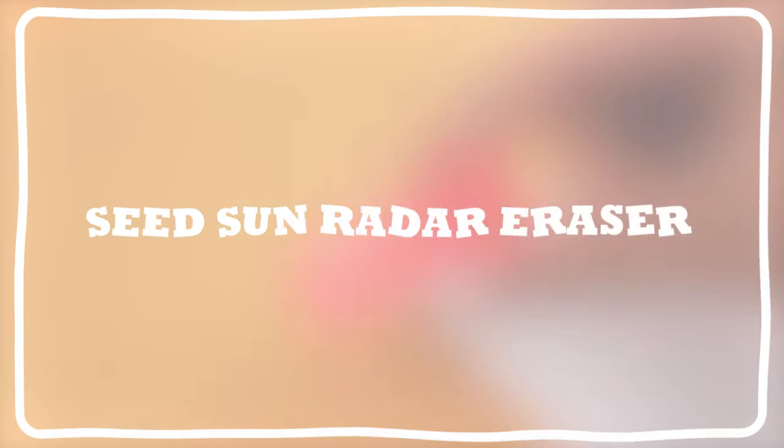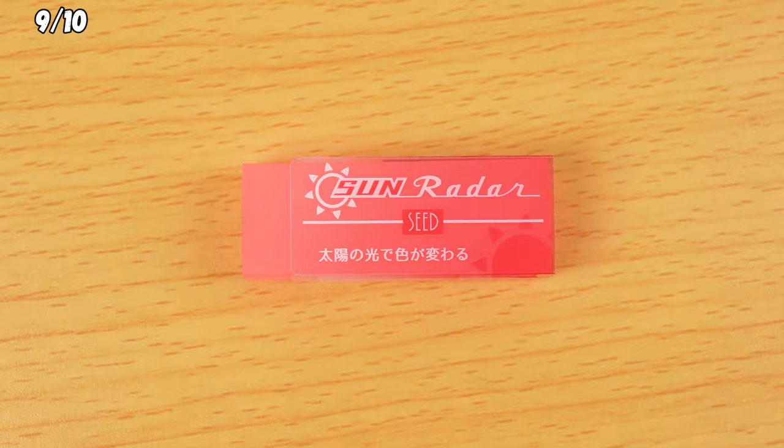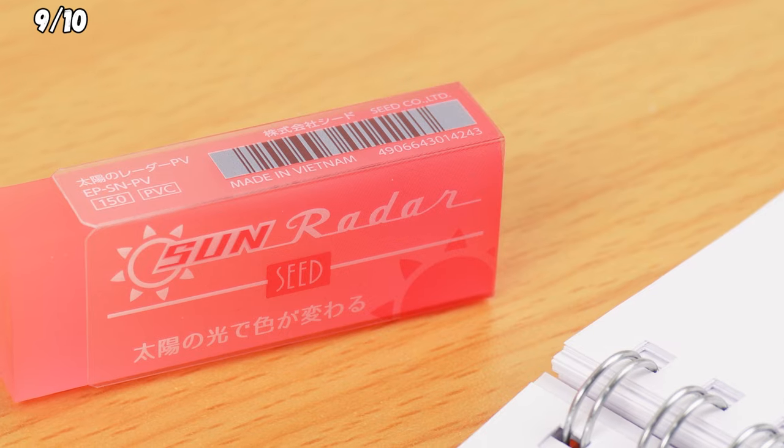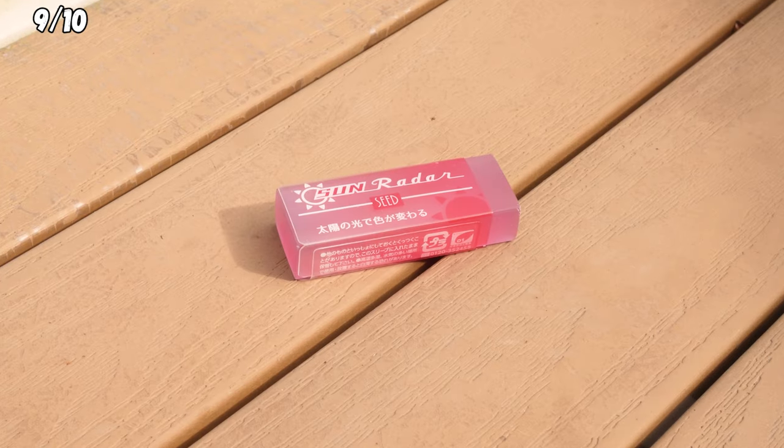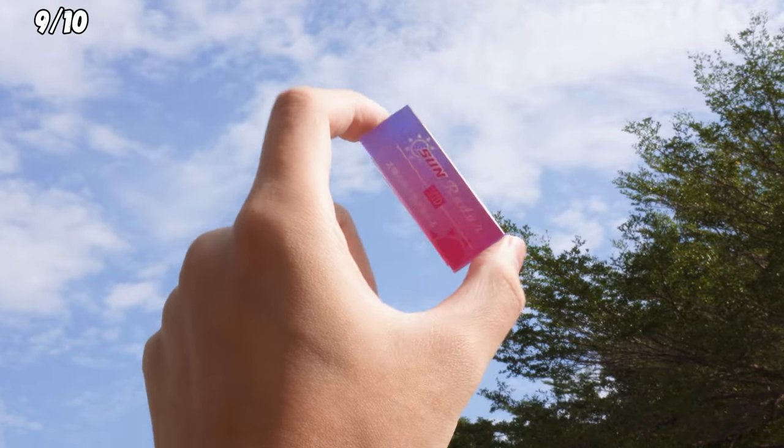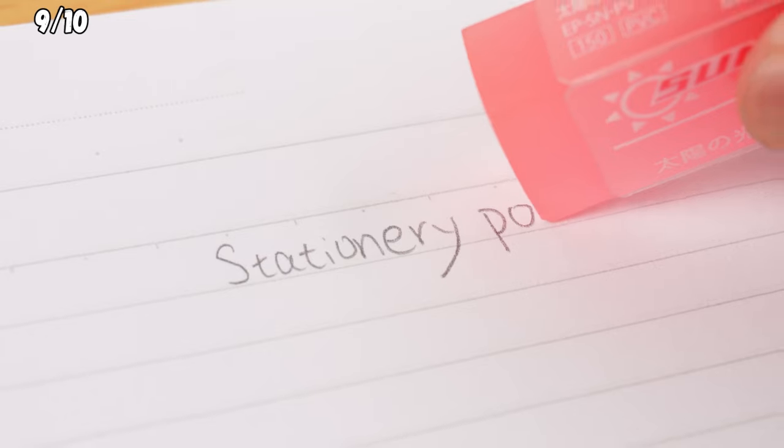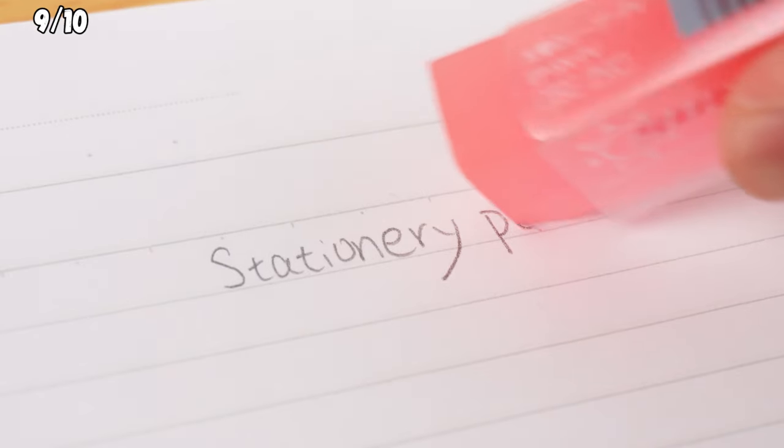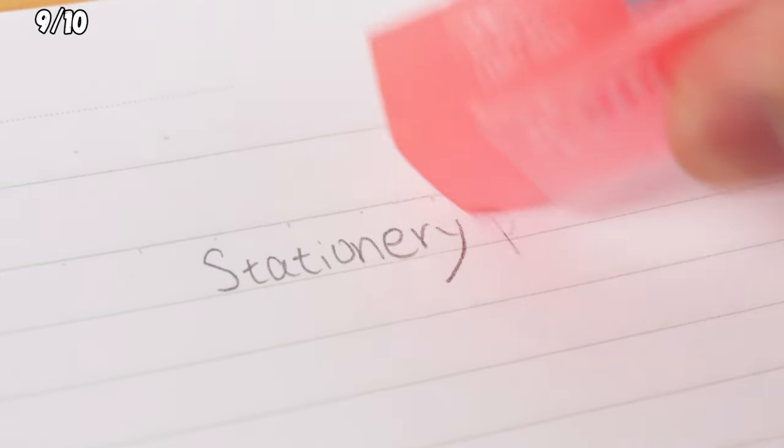Seed Sunradar Eraser. This eraser is like a mood ring for the weather. It changes color. Pop it in a sunny spot, and the transparent pink eraser transforms into a cool purple. Plus, it's a high-quality eraser that effortlessly wipes away text without wrecking your paper.